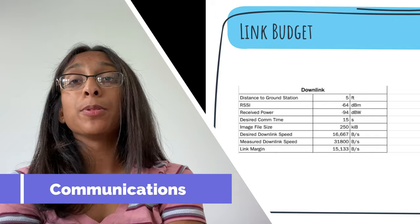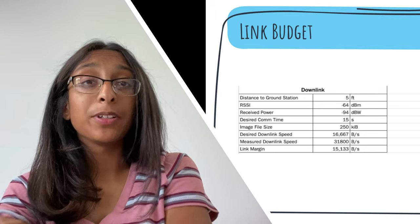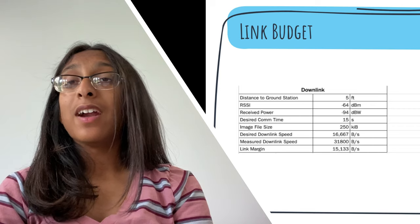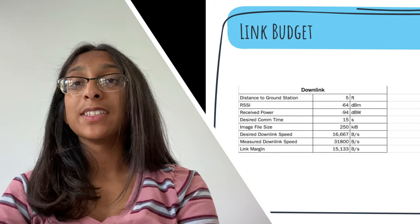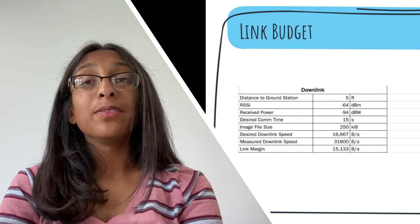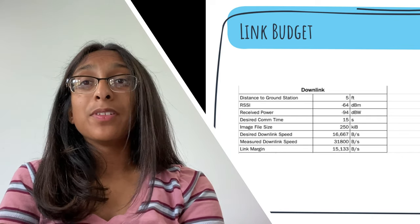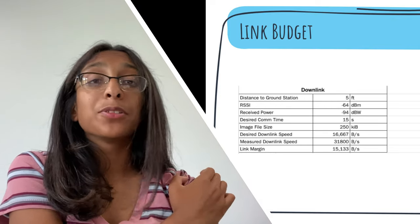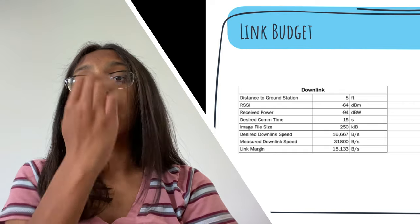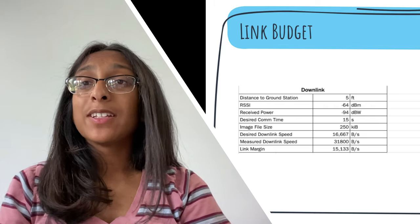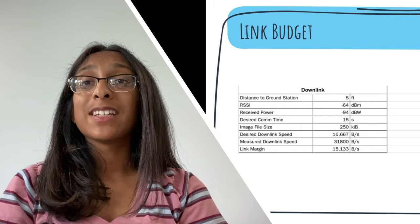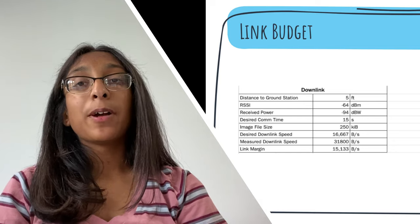For our link budget, we used Bluetooth communication with worst-case scenario values. Our worst distance to ground station was about 5 feet and our average RSSI value was negative 64 dBm, giving a received power of negative 94 dBW. Our desired comm time was about 15 seconds with an average image file size of about 250 kibibytes, yielding a desired downlink speed of about 16,000 bytes per second. We measured our actual downlink speed at 31,800 bytes per second — about an 8-second comm time — giving us a link margin of about 15,000 bytes per second.